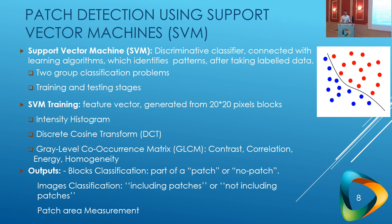The second phase uses the images separated from the previous phase to classify pavement patches using SVM. We use support vector machines, which is a discriminative classifier that can identify patterns. It works well for two-group classification problems like ours.